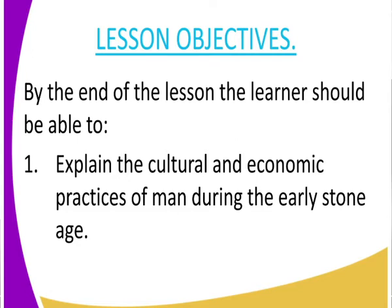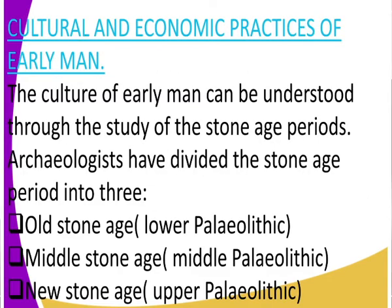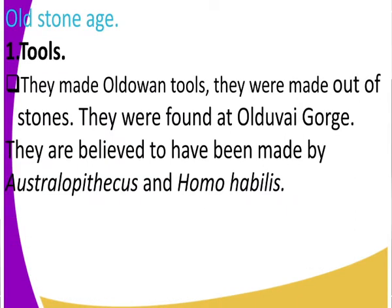During the early Stone Age, the cultural and economic practices of early man were grouped into three stone age periods. The first stone age period is called the Old Stone Age, also termed the Lower Paleolithic period. Then we have the Middle Stone Age, which is the Middle Paleolithic period. Lastly, we have the New Stone Age. In today's class we'll look at the Old Stone Age.